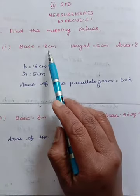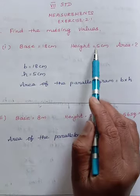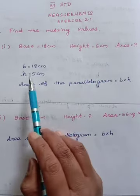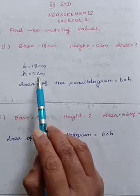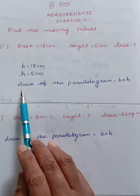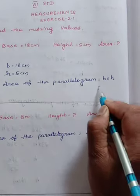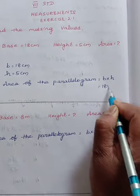Base value is 18 cm, height value is 5 cm. Now we have to find the area. So base is 18, height is 5 cm. We know that area of a parallelogram is base into height. So the base value is 18 and the height value is 5.